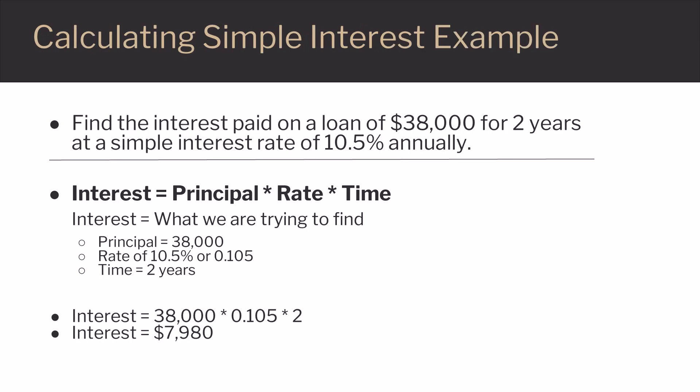Find the interest paid on a loan of $38,000 for 2 years at a simple interest rate of 10.5% annually. We'll use the formula Interest equals Principal times Rate times Time, and plug in the numbers for principal, rate, and time.